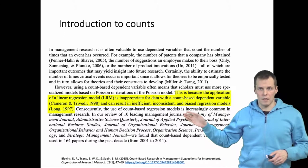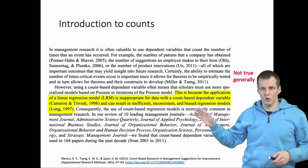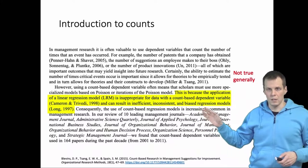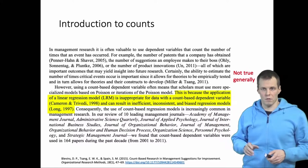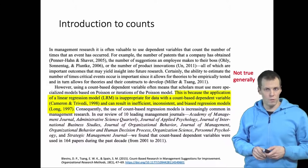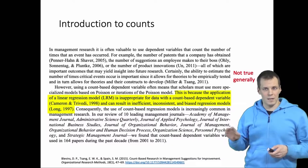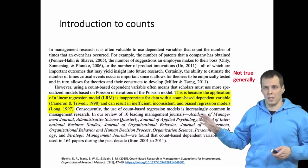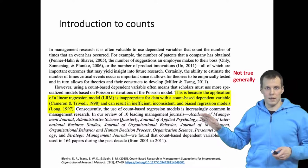This article explains that applying normal regression analysis is inappropriate for data where the dependent variable is a count, and that using it can produce results that are inefficient, inconsistent, and biased. That statement is simply not true generally.